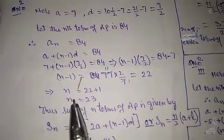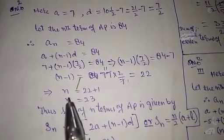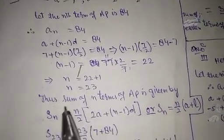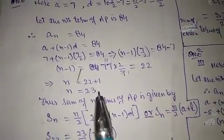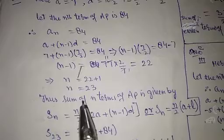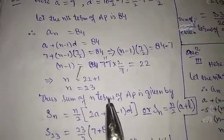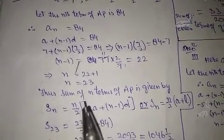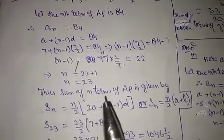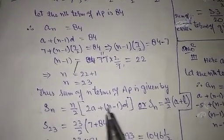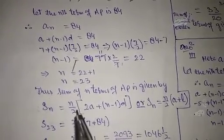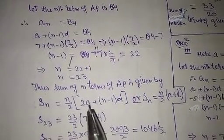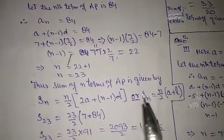The number of terms of this AP is 23. Now we can find the sum easily. The sum of n terms of an AP is given by Sn = n/2 × (a + l), where l is the last term, or Sn = n/2 × [2a + (n−1)d].